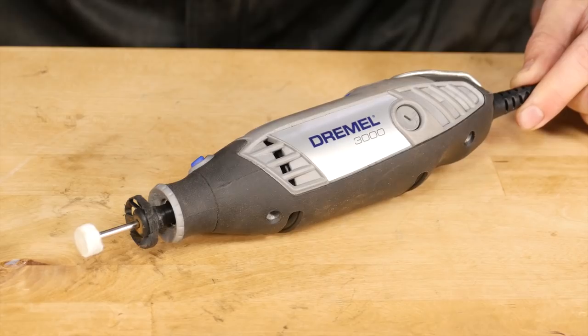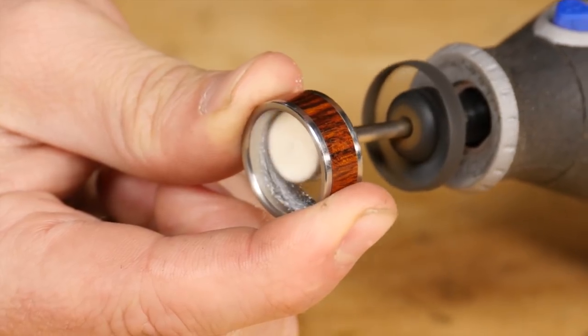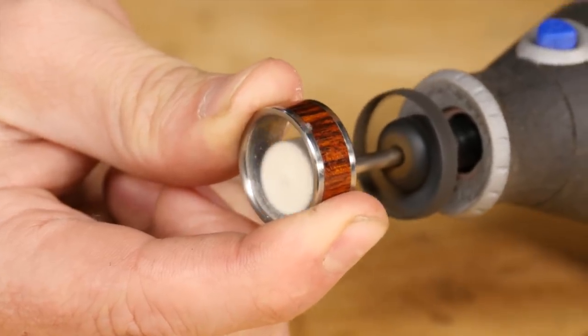If you don't have pin jaws you can also use a Dremel with a small buffing wheel. Just apply some scratch free wax then polish the ring with a plastic polish as well.